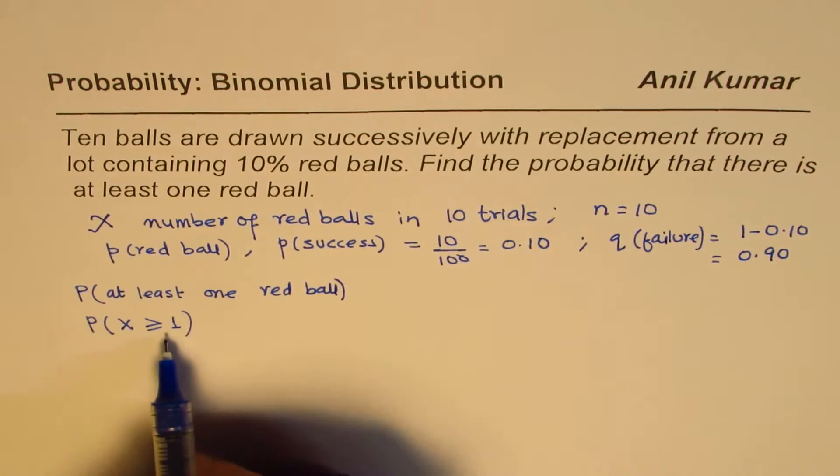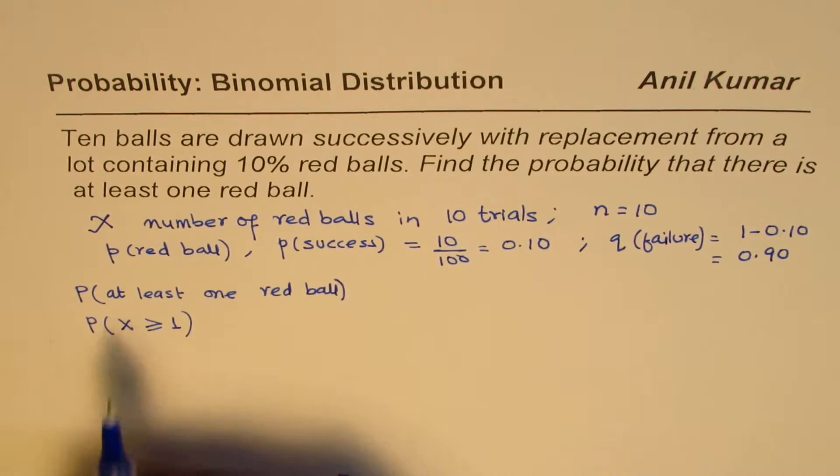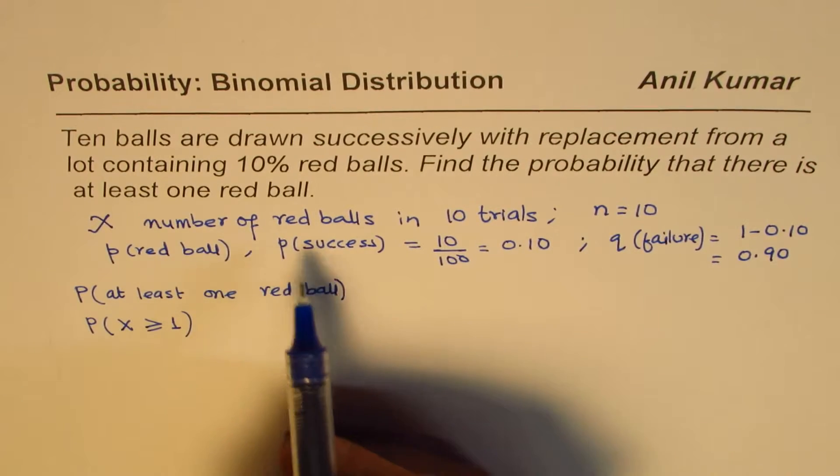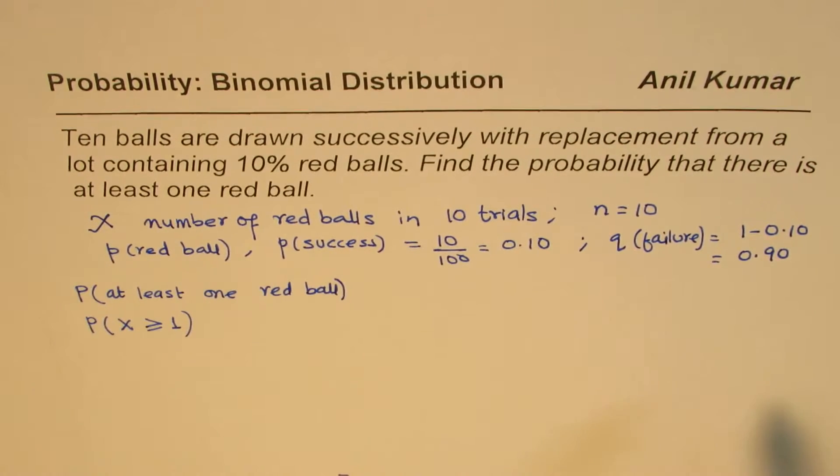Now, greater than or equal to 1 means we could do one way: probability that there's one red ball, two, three, four, five, six, seven, eight, nine, and ten. We could add them all.